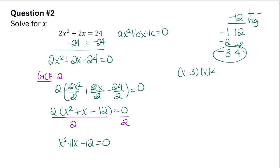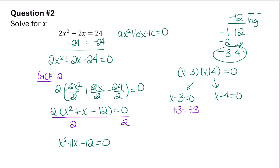I can separate this into two equations: x minus 3 equals 0 and x plus 4 equals 0. Adding 3 to both sides gives x equals 3. Subtracting 4 from both sides gives x equals negative 4. So those are the two solutions to this quadratic equation.